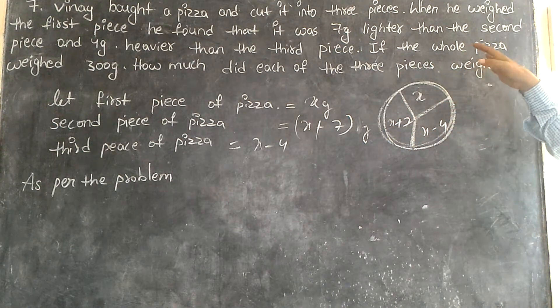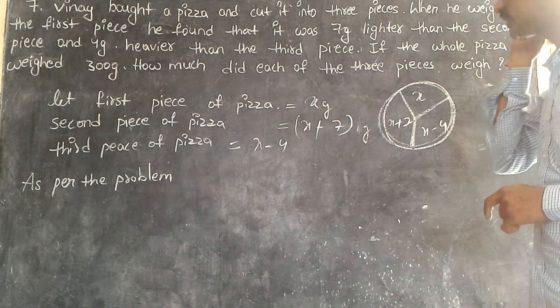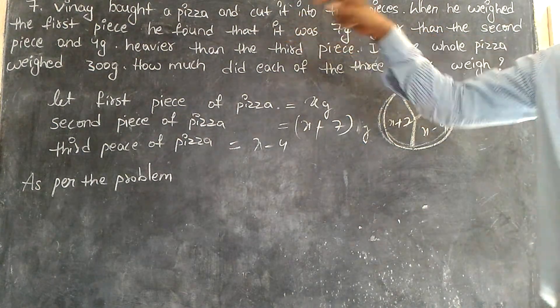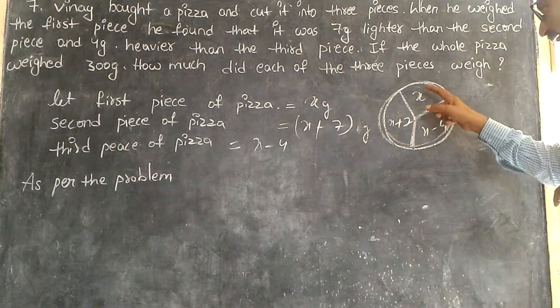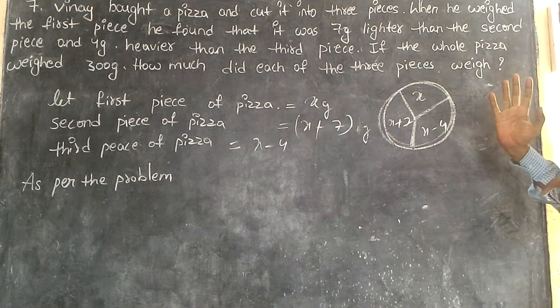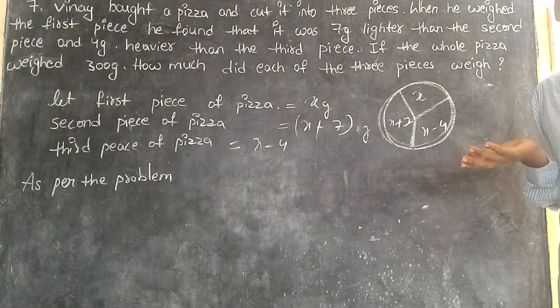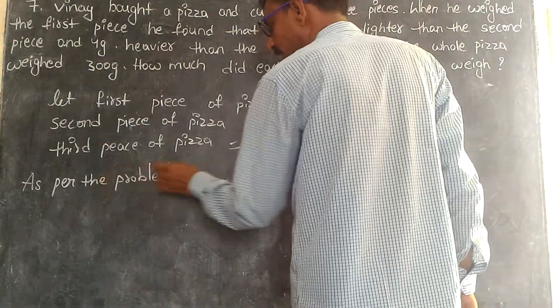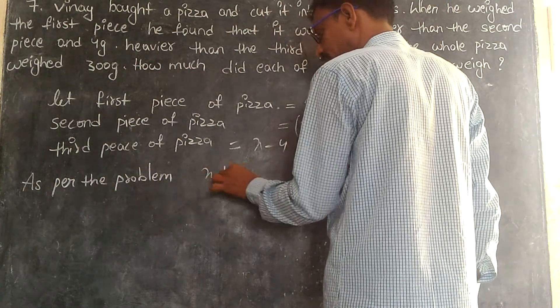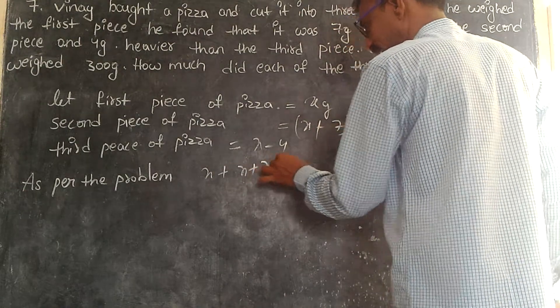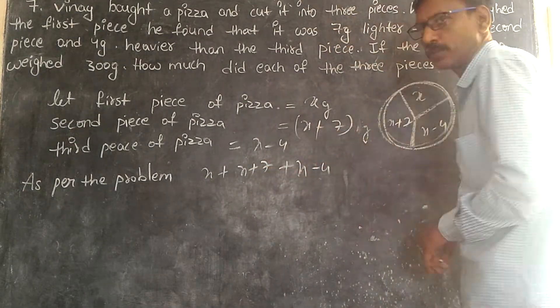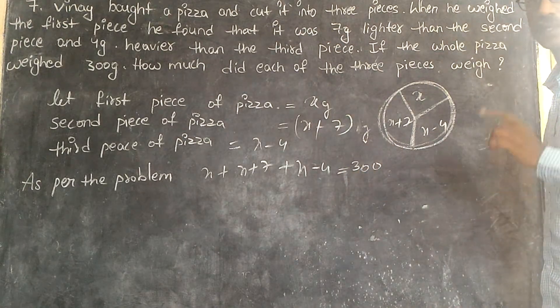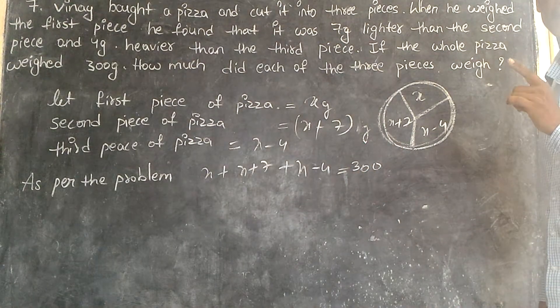Now listen. Total weight of the pizza is given. The weight of the pizza is 300 grams. By adding this and this and this, we get total weight. That is given by 300 grams. Can I write it here? As per the problem, X plus 7 plus X minus 4 is equal to 300 grams.